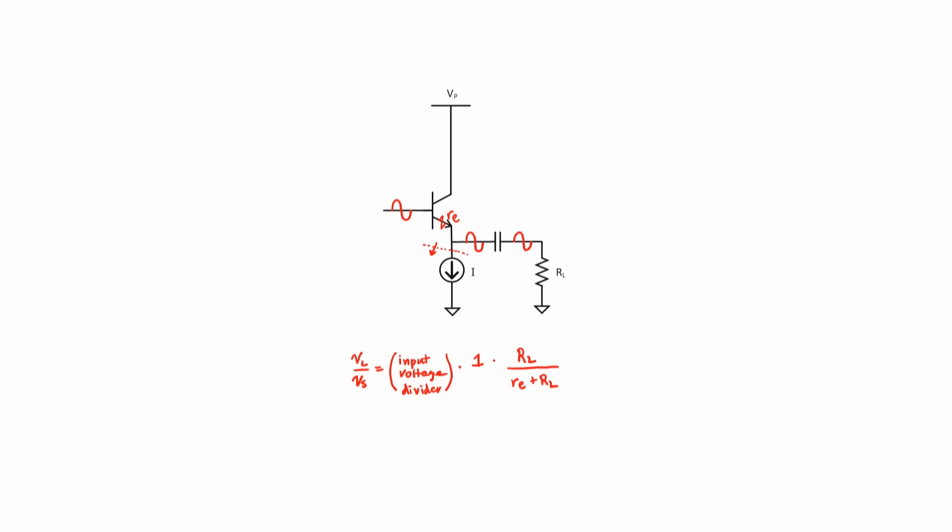There's another advantage as well, but it requires careful biasing of the circuit. If you arrange it so that I matches the required DC current, then you can set it up so that the only current going through the load resistor is the AC current. If all of the DC current passes down through the current source, then you can get rid of the coupling capacitor. Getting rid of the capacitor is important in integrated circuit designs because capacitors are fairly large components. If you're careful with your DC biasing, eliminating these capacitors can save a lot of chip space.